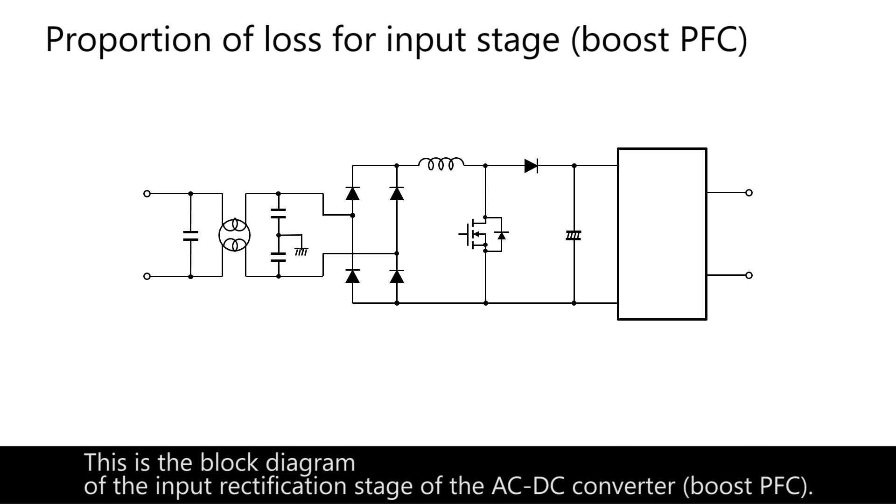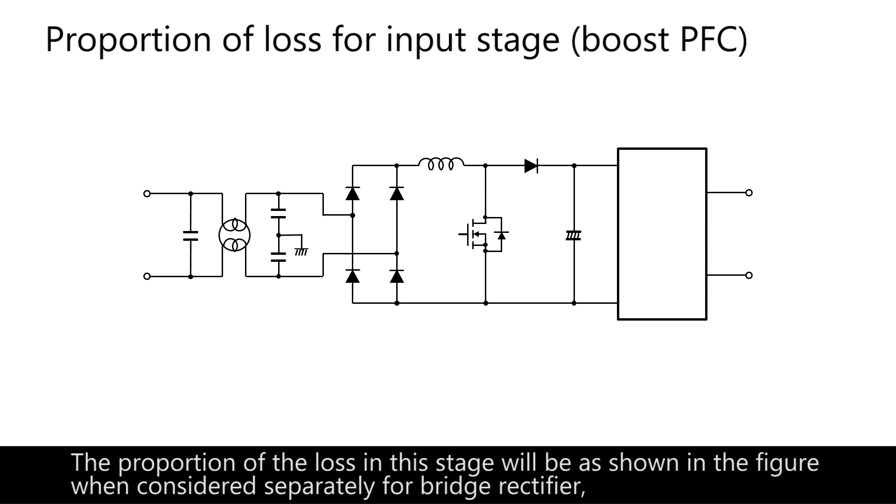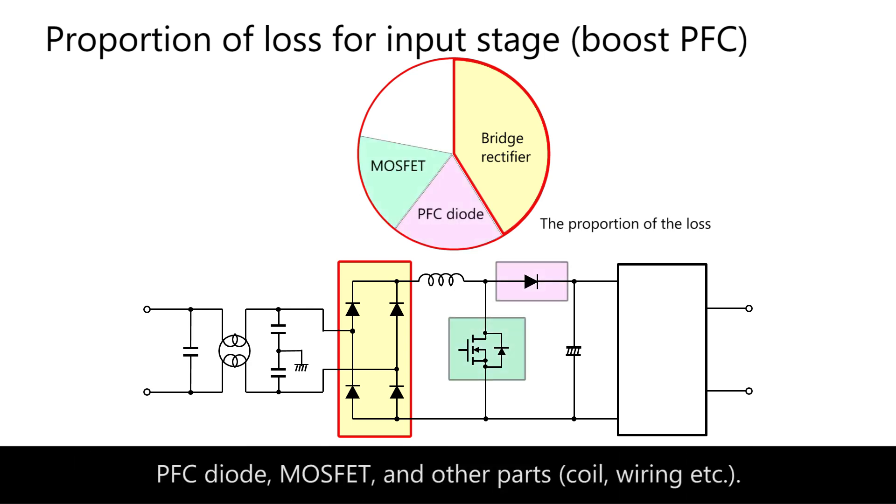This is the block diagram of the input rectification stage of the AC-DC converter. The proportion of the loss in this stage will be as shown in the figure when considered separately for bridge rectifier, PFC diode, MOSFET, and other parts including coil and wiring.